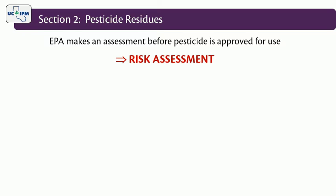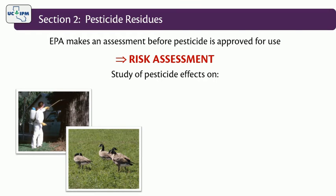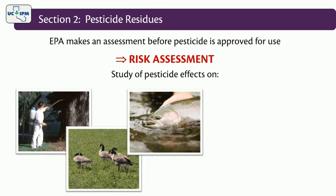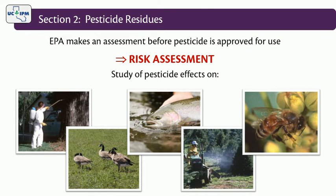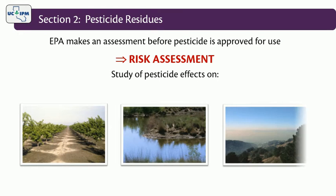Scientists study the effect of pesticides on non-target organisms, such as humans, wildlife, aquatic organisms, plants, bees, and other beneficial insects. They look at how the pesticides break down or move around in the environment in order to determine how they impact soil, water, and air quality after they have been applied.